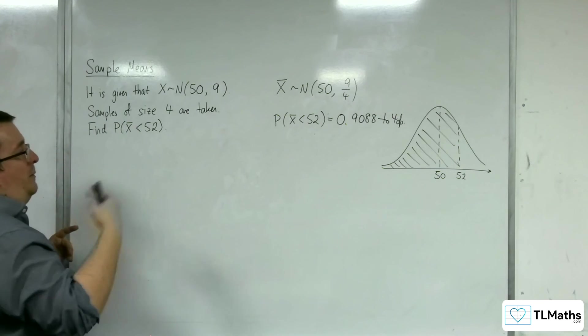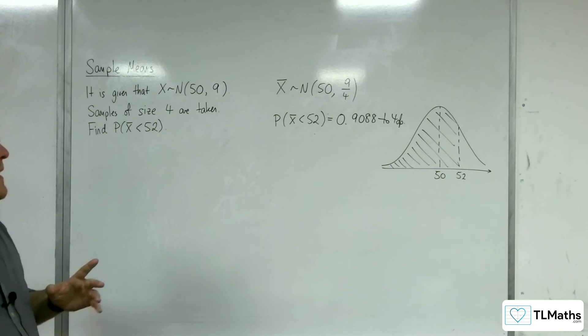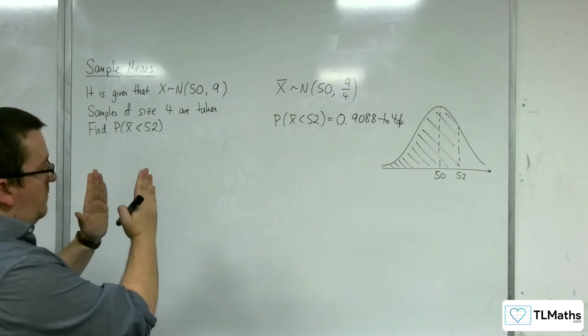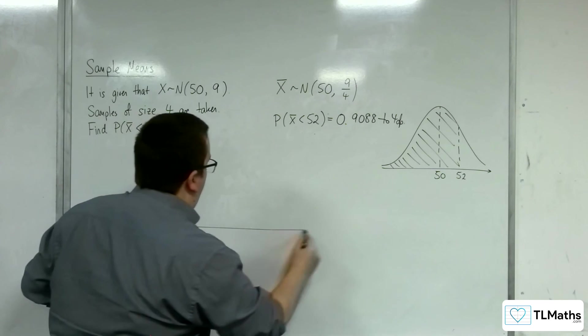So if you've taken a sample of size 4 and you've averaged that out to be less than 52, more compacted. So think of it this way.